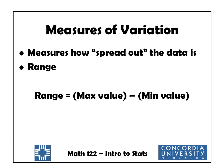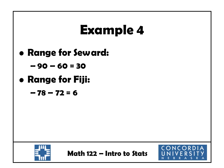We'll talk about three different measures of variation. The first is the range — you take the maximum value and subtract the minimum value. For Seward, the range is 90 minus 60, which is 30. For Fiji, it's 78 minus 72, which is 6. So Seward's temperatures are much more spread out than Fiji's.